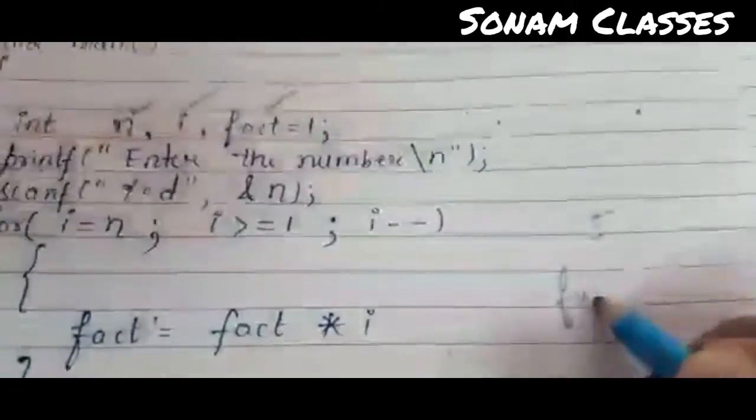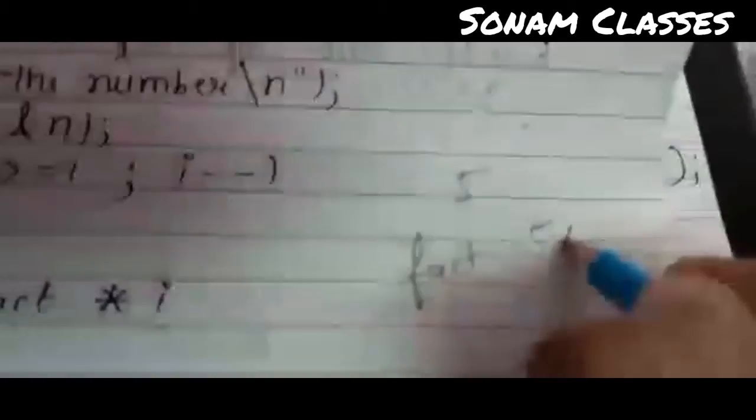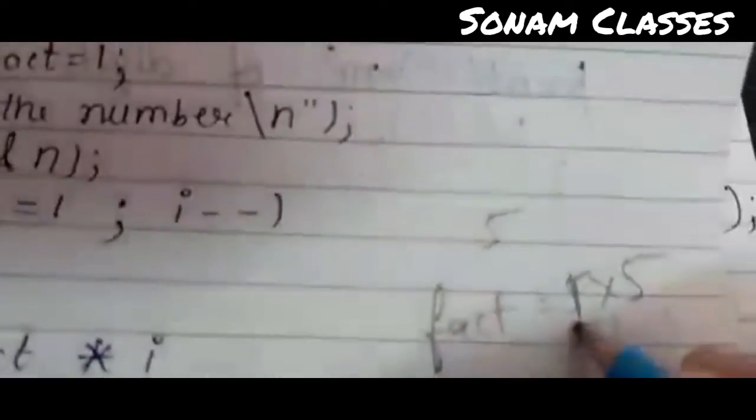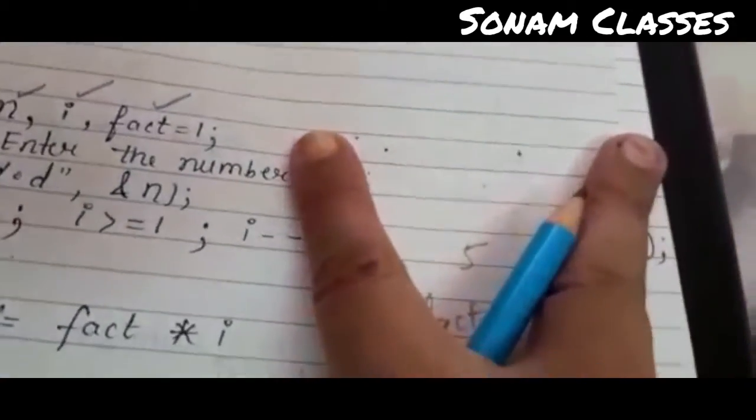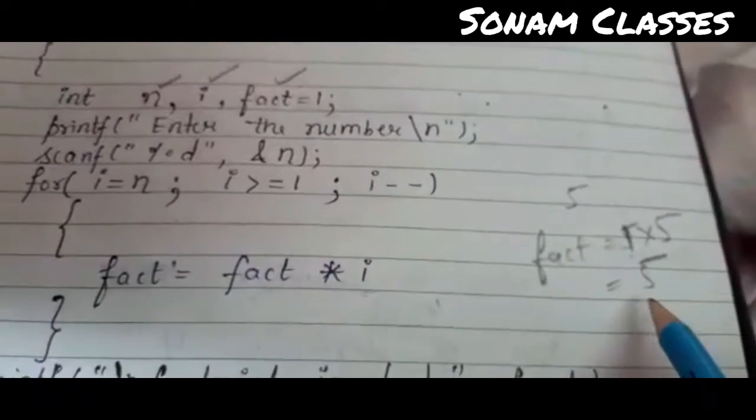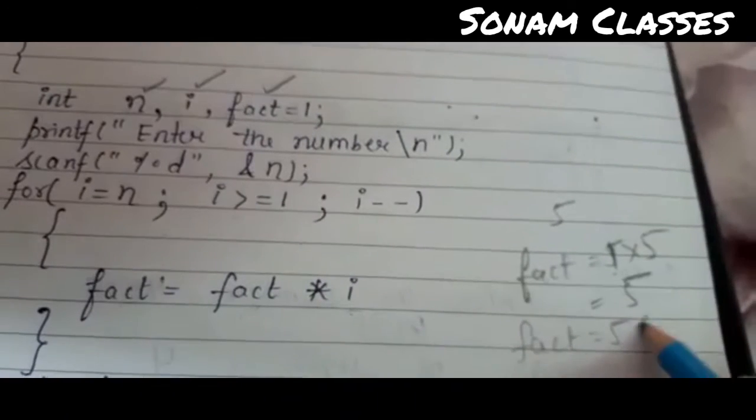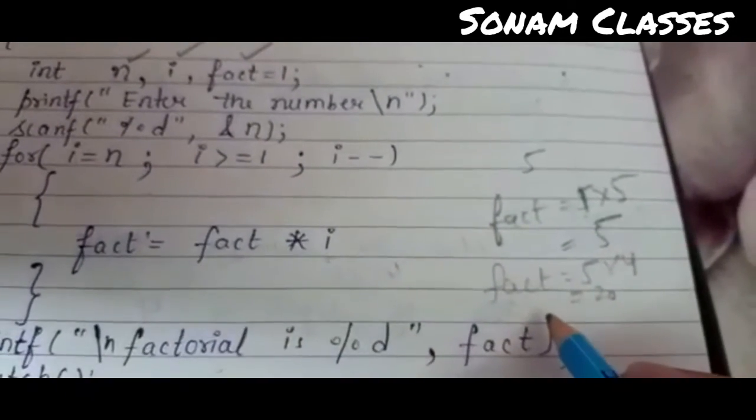Factorial value is what will become? Factorial value is 5 into, sorry, 1 into 5. Factorial is 1. Again loop, now loop again. Now we have 5, now i is 4. Factorial, factorial value is 5, i value is 4, how much will become? 20. Then we go back again.